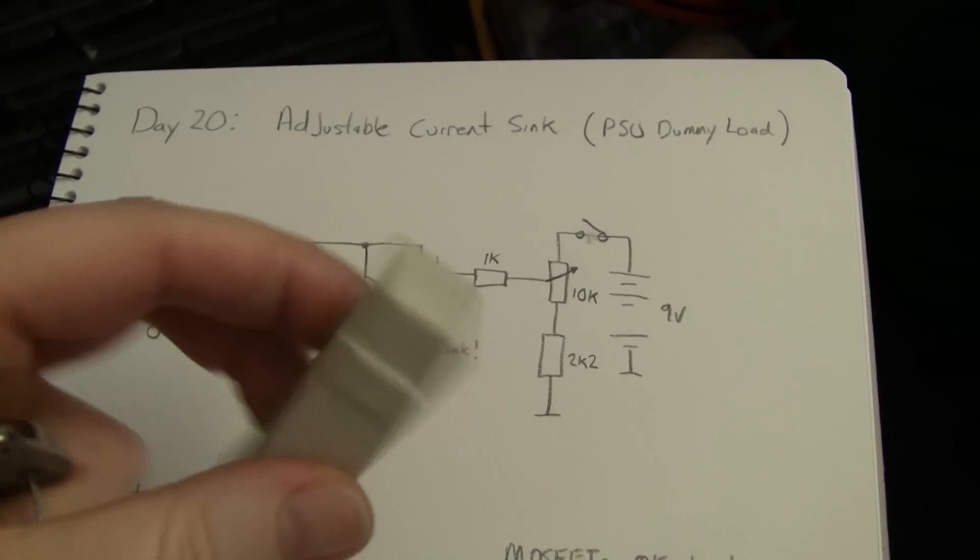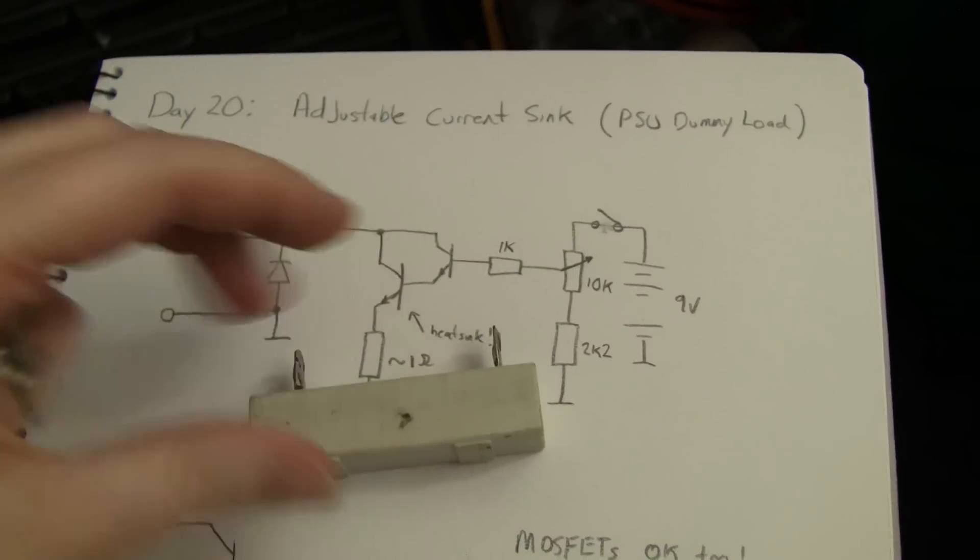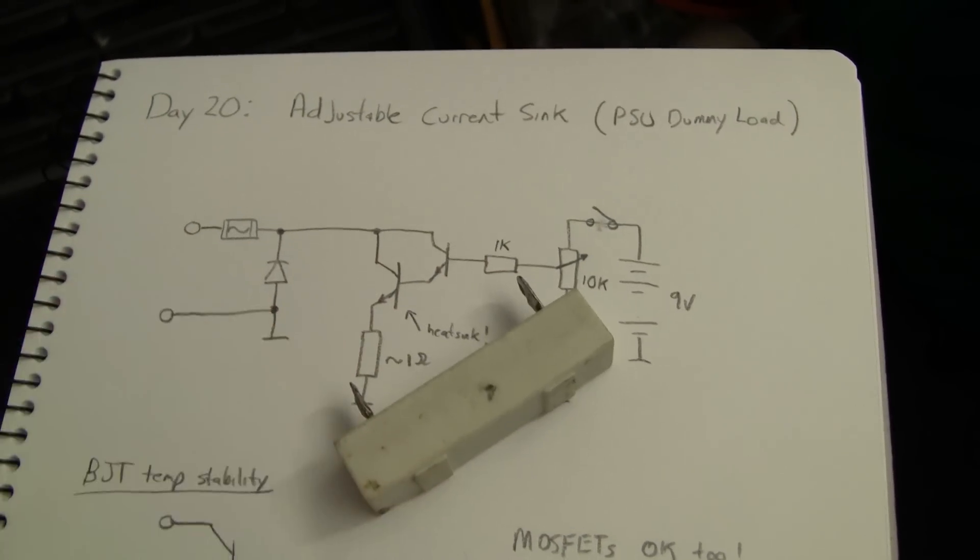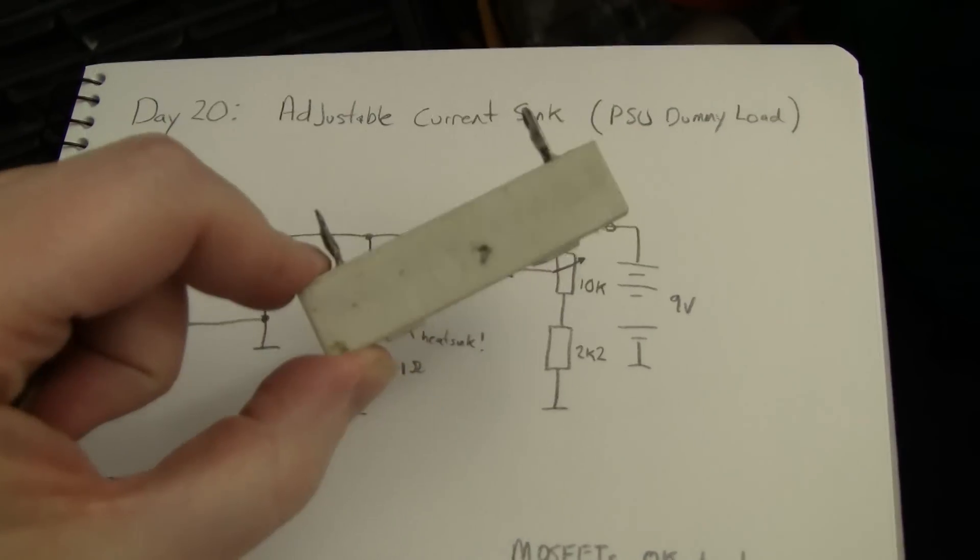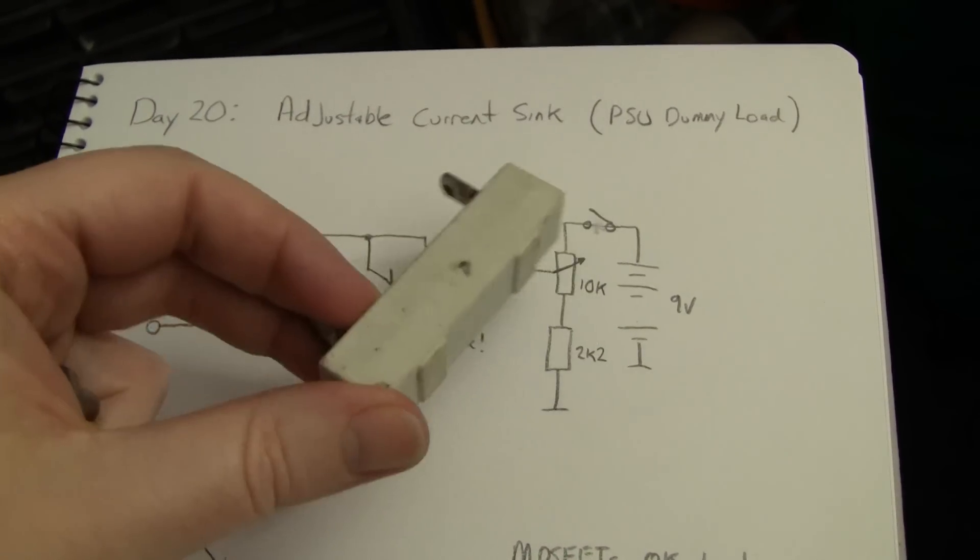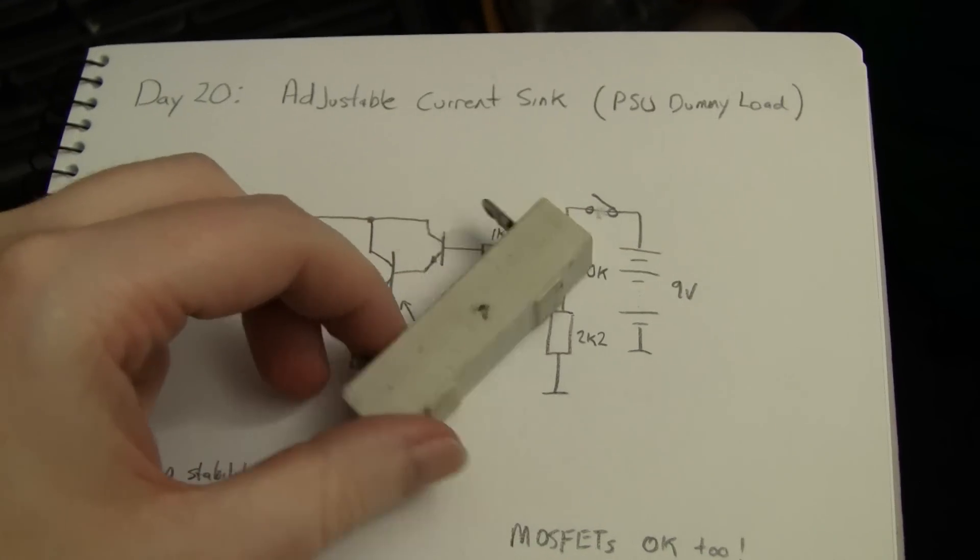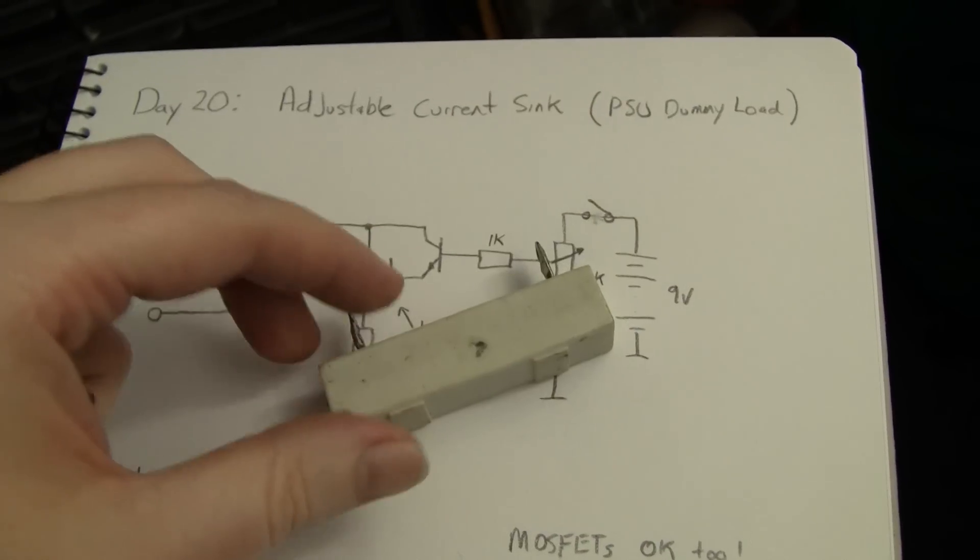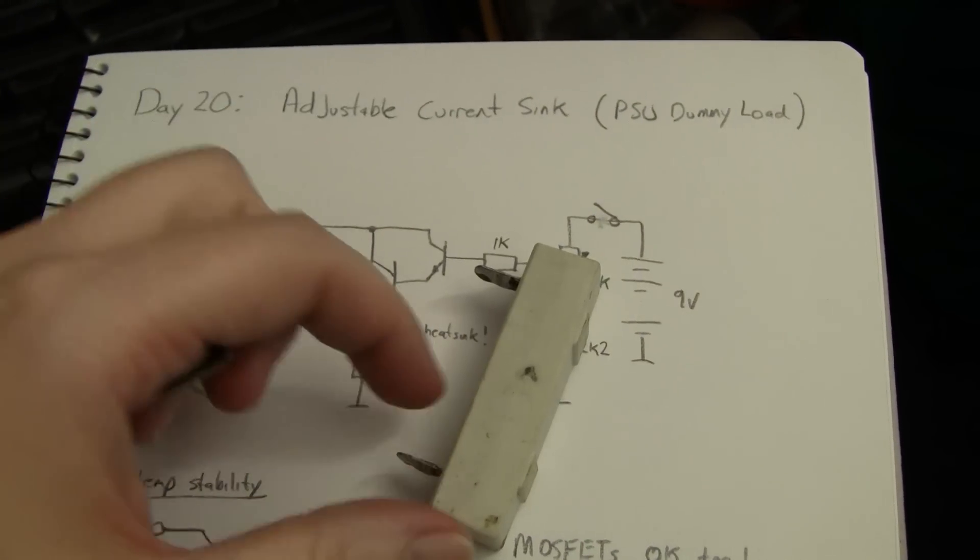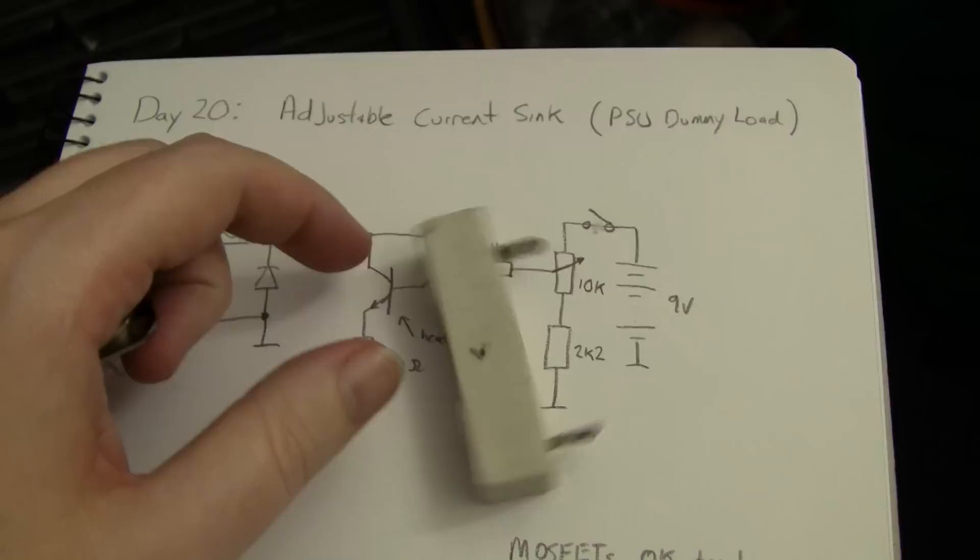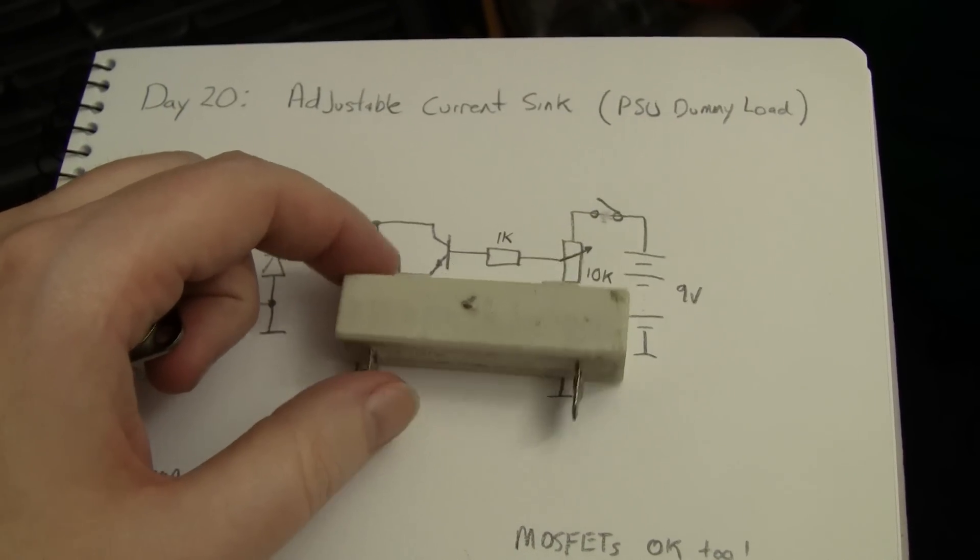Most people just grab a resistor like this chunky thing here and plonk it across the output to measure current and voltage. That's all fine but it's fixed, not adjustable, expensive, and single-purpose. You need a different resistor for each current and voltage, so it's not a very tenable solution.